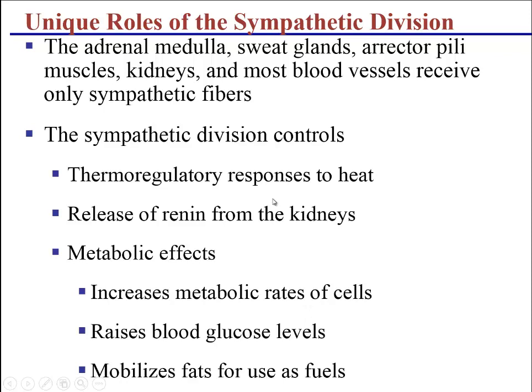The sympathetic division alone controls the adrenal medulla, sweat glands, erector pili muscle, kidneys, and most blood vessels — whether we constrict or dilate blood vessels is a sympathetic function determined by the presence or absence of norepinephrine. Sweating in response to heat is sympathetic. Releasing renin from the kidneys — which raises blood pressure and increases blood volume — is sympathetic. The sympathetic side also speeds up metabolic rate, releases more glucose from the liver, and tells us to burn fat at a faster rate.